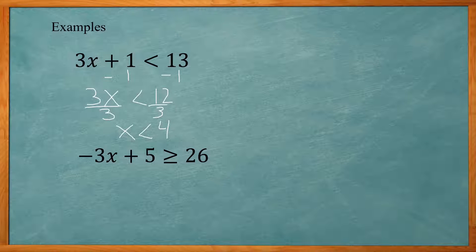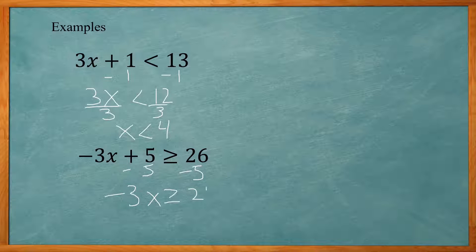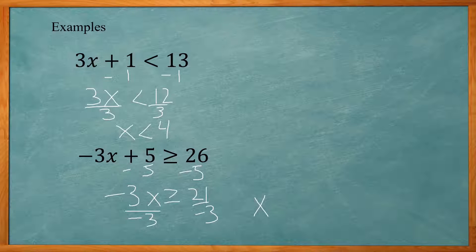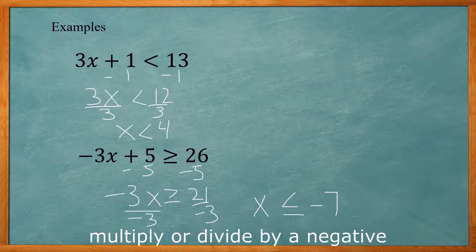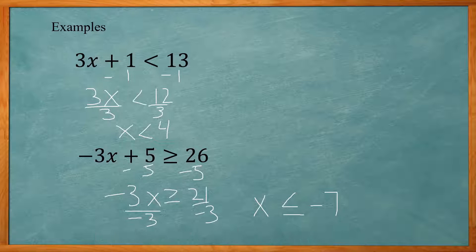The second example: negative 3x plus 5 is greater than or equal to 26. Subtract 5 from both sides to get negative 3x greater than or equal to 21, then divide by negative 3 to get x less than or equal to negative 7. Whenever you divide by a negative number, you need to flip the direction of the inequality symbol — so greater than or equal to becomes less than or equal to. Any x value less than or equal to negative 7 will work.